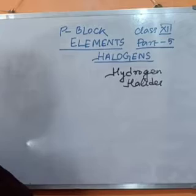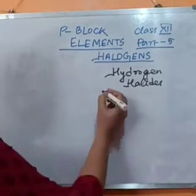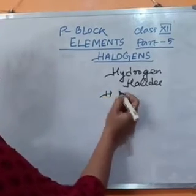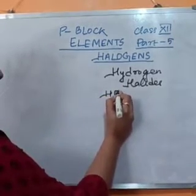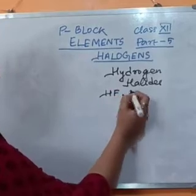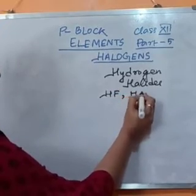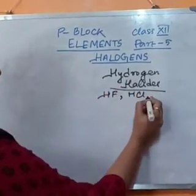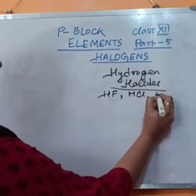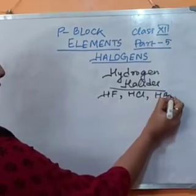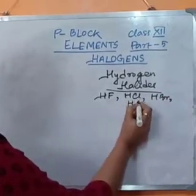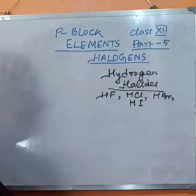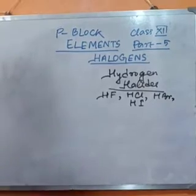Now, what are the hydrogen halides? Hydrogen halides are basically hydrogen chloride, hydrogen bromide, and hydrogen iodide. These are the hydrogen halides.